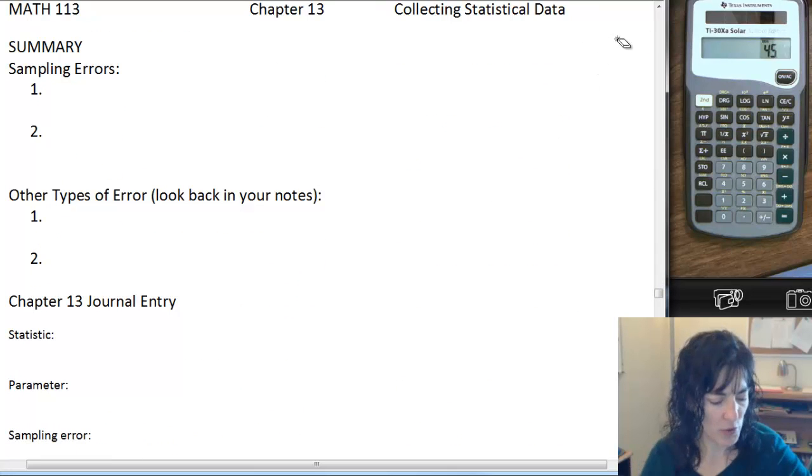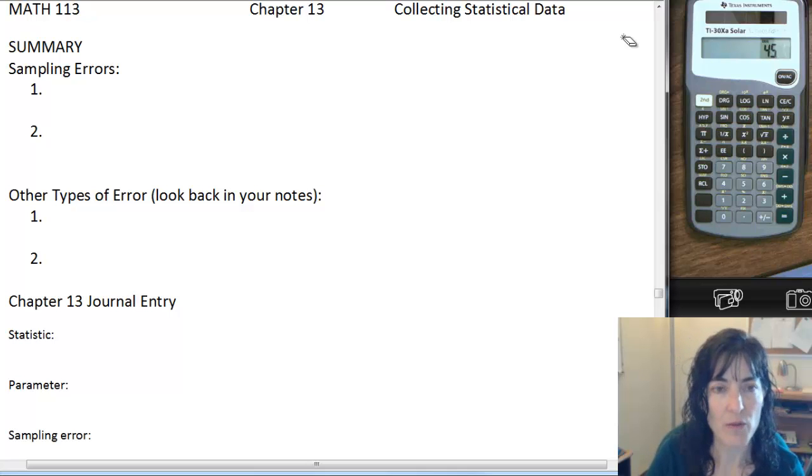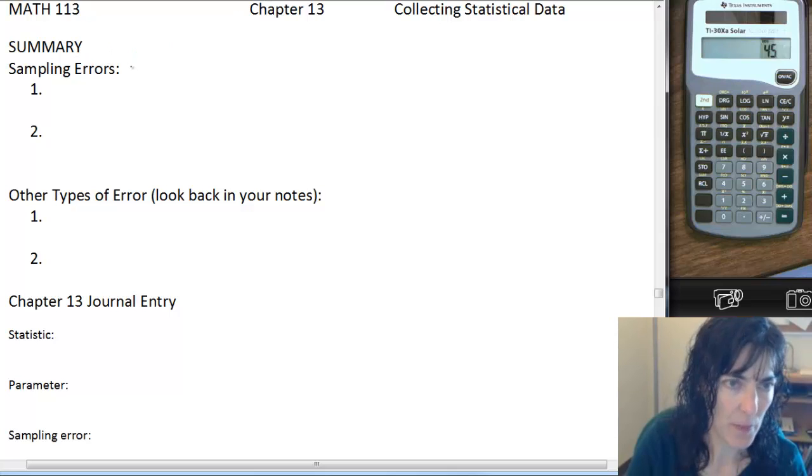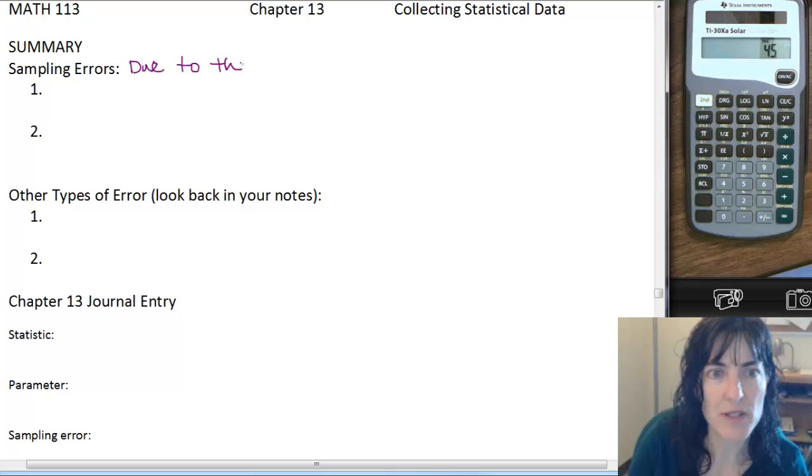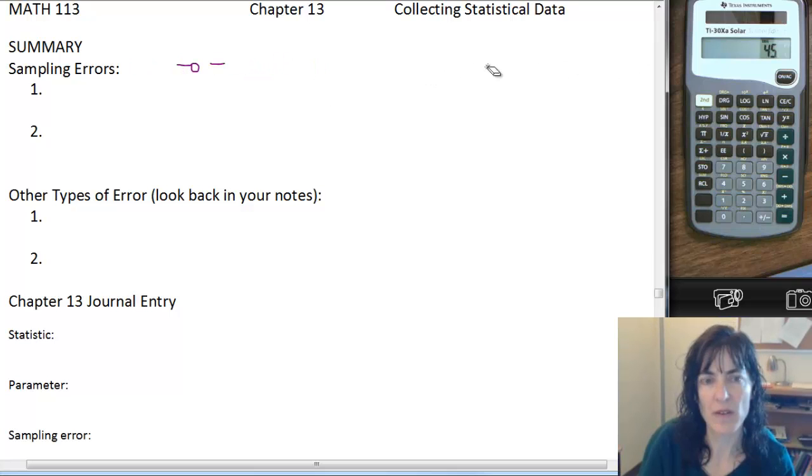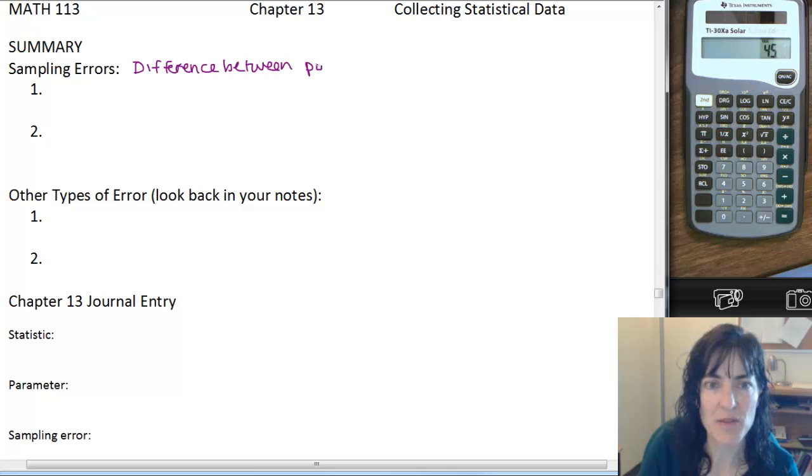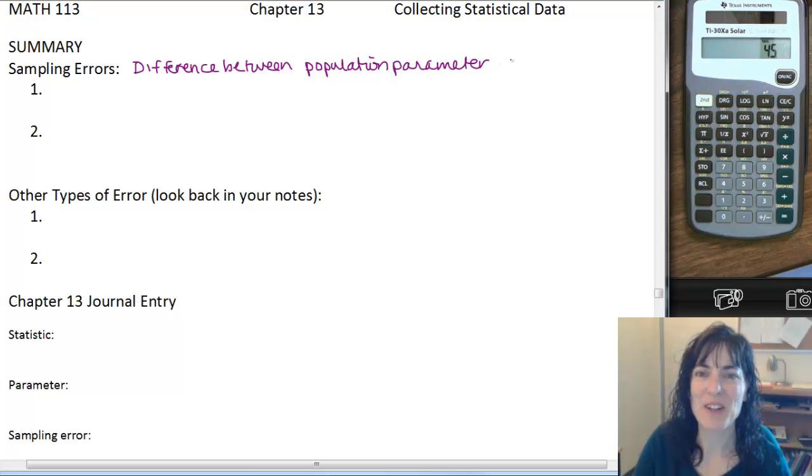So sampling errors, let's put that all together again from our presentation. Sampling error is the difference between the population parameter, what you were trying to find, and what you actually found, which is the sample statistic.